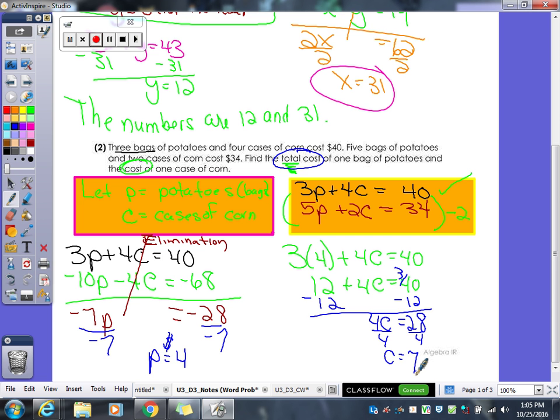So you have to write that sentence. Let's see if I can find some room here. No I can't. So you guys will have to write the sentence. Potatoes cost four dollars a bag. Corn costs seven dollars a case. So everybody, any questions on that one? Okay, next page.